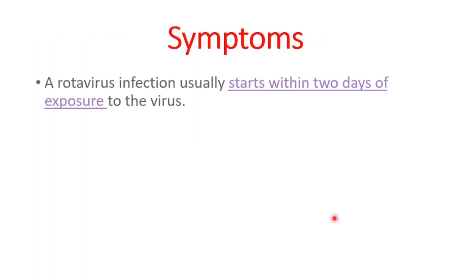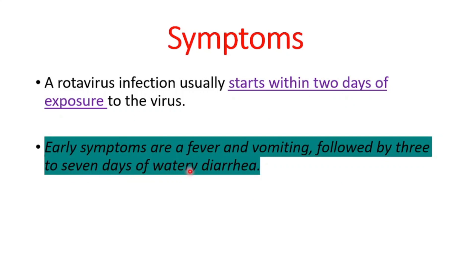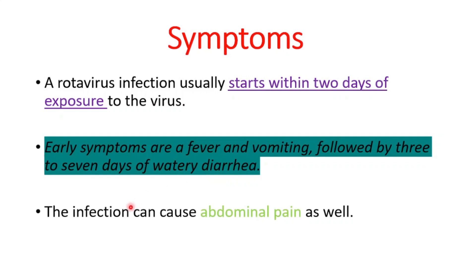Symptoms usually start within two days of exposure to the virus. Early symptoms are fever and vomiting, followed by three to seven days of watery, non-bloody diarrhea. The infection can also cause abdominal pain.